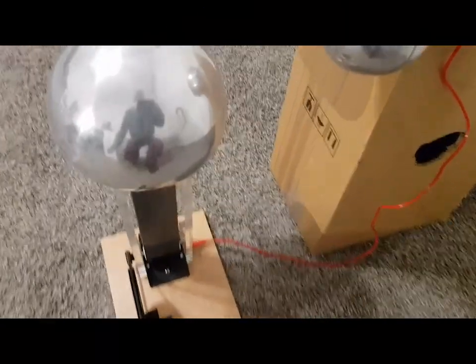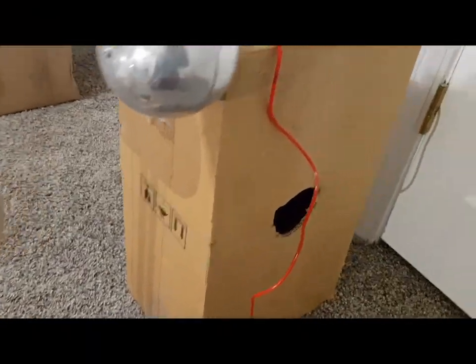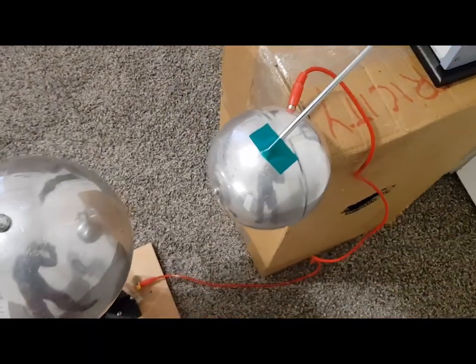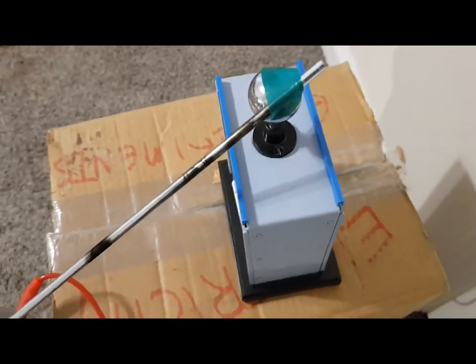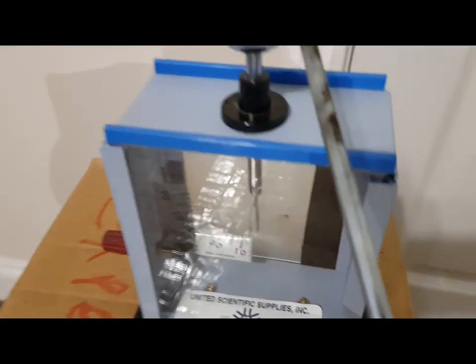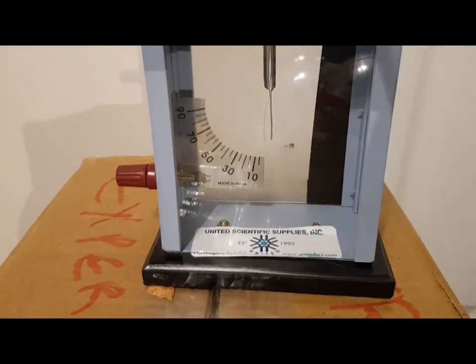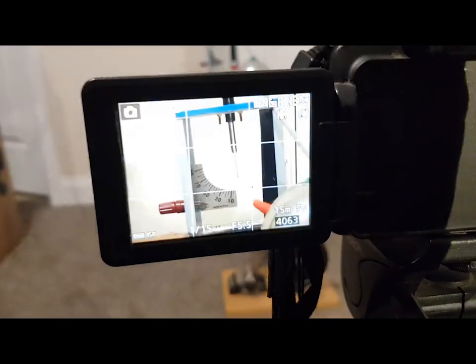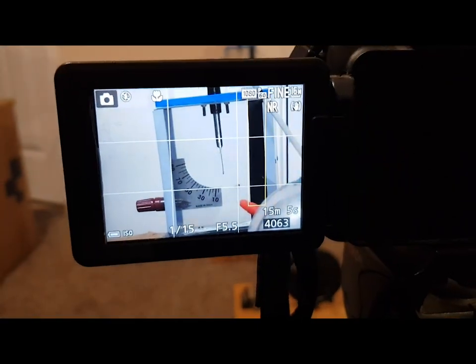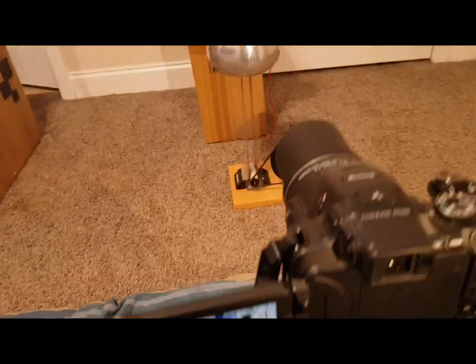Our setup will be the Van de Graaff generator with a discharge wand set about five inches apart, a metal rod connecting the discharge wand to an electroscope. The electroscope is a rudimentary tool for measuring electric charges. We also have a camera set up on the electroscope where you can see the gold foil leaf better.